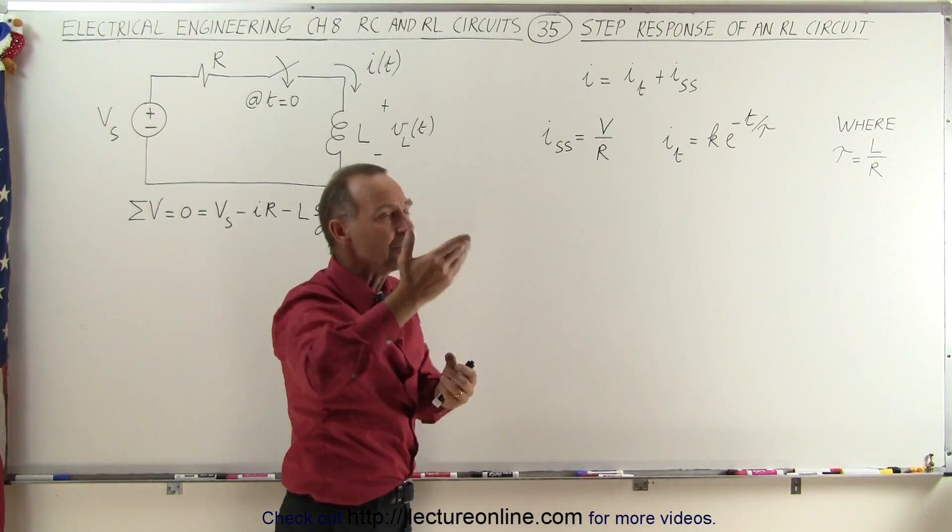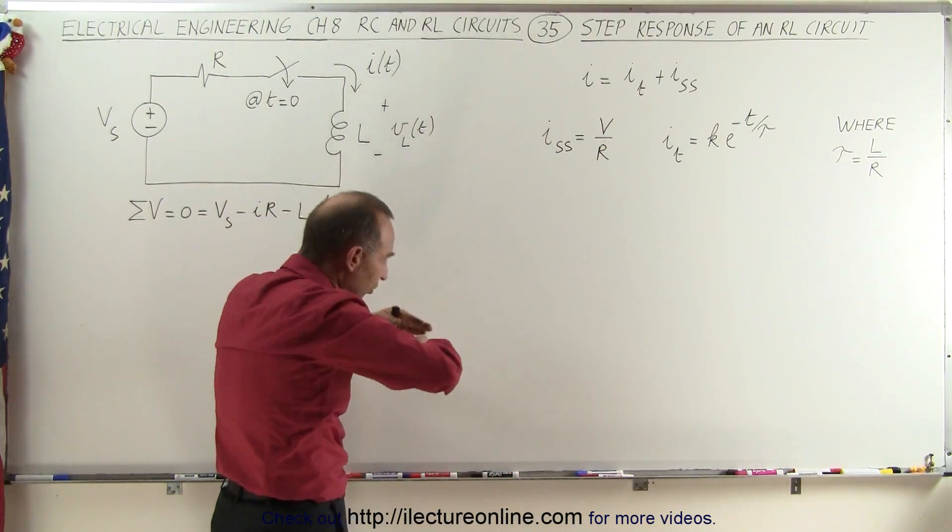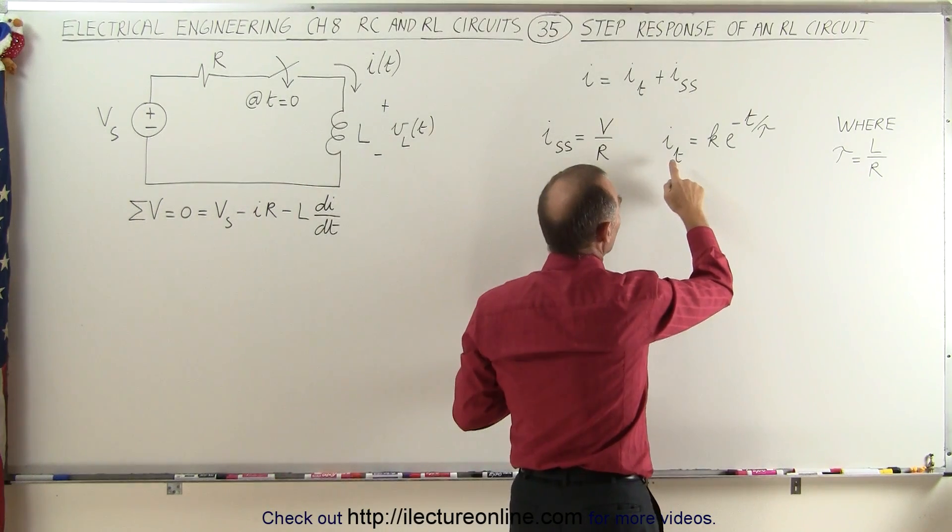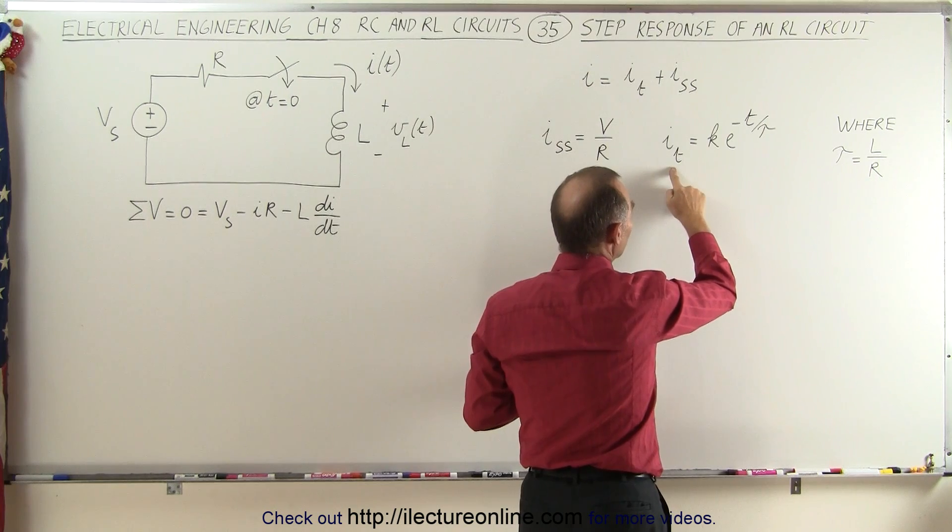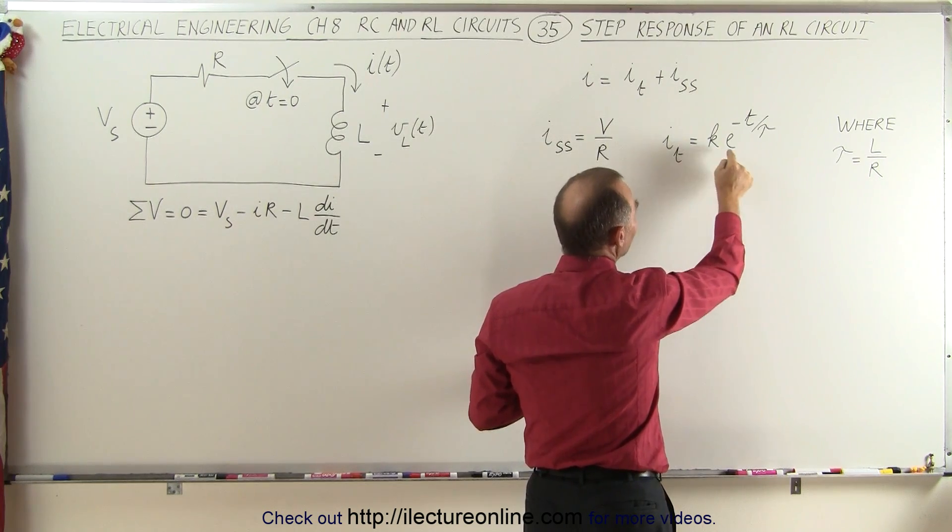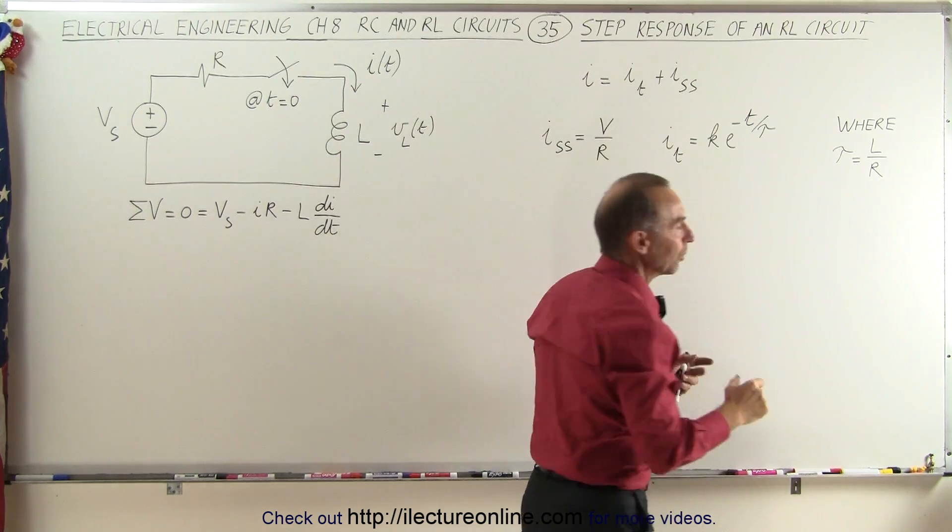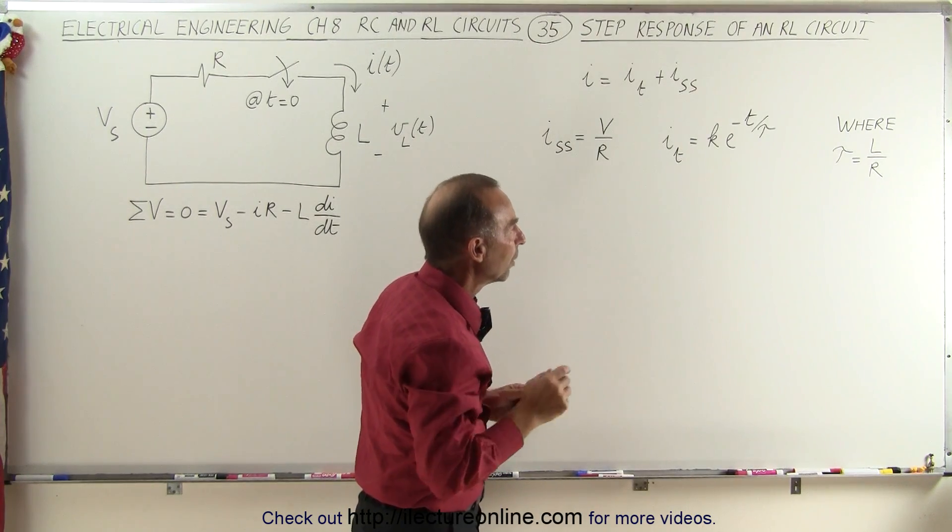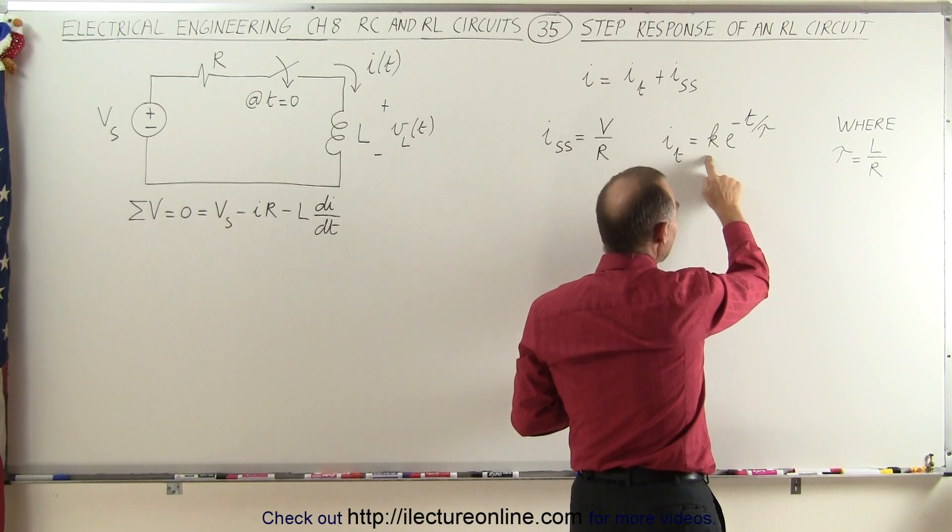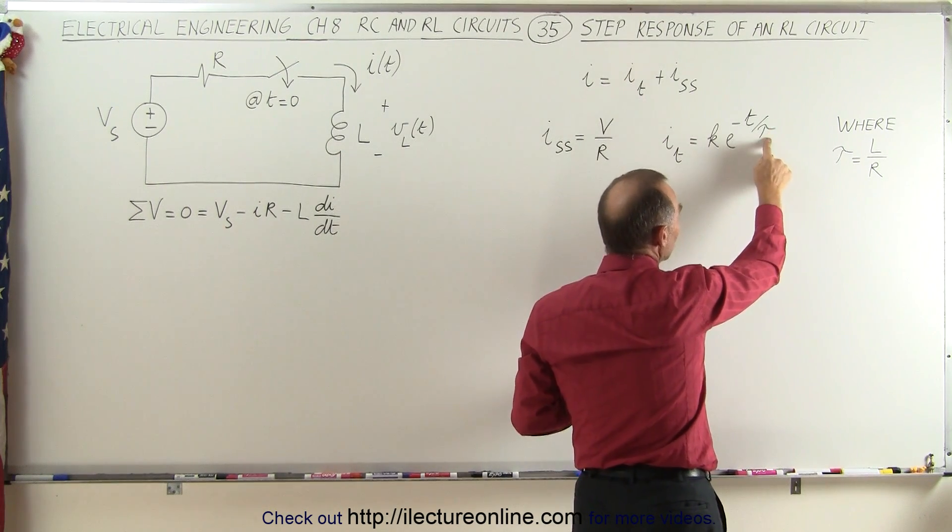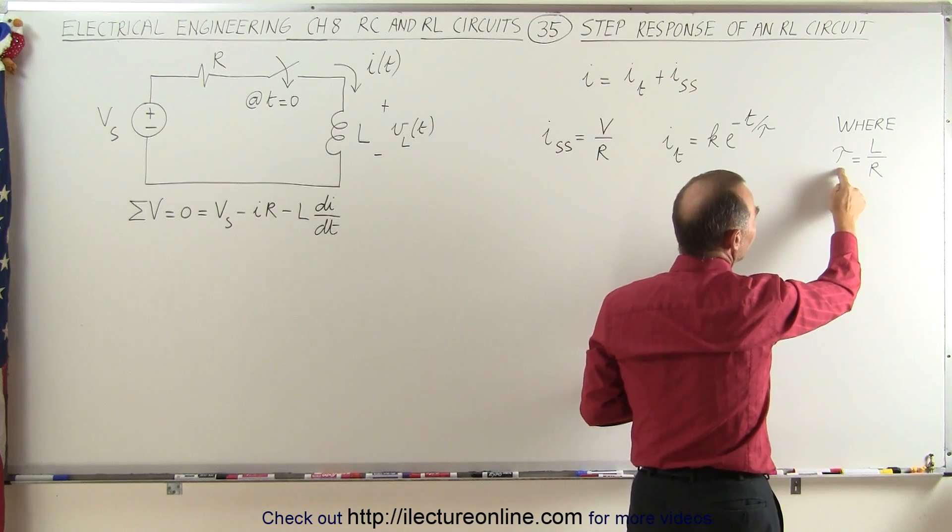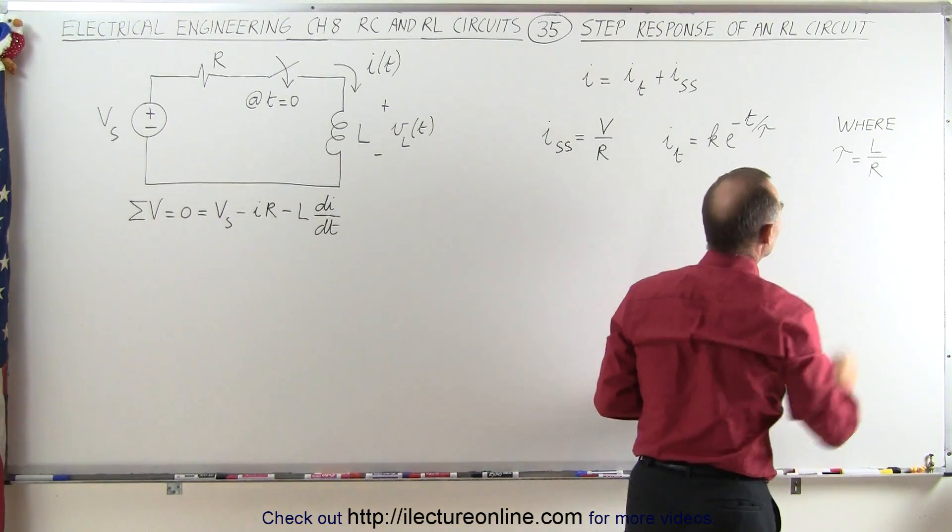But while the circuit is increasing, as soon as you close the switch, the current will increase. Then you can say that the current in the circuit, the transient portion, will be some constant times e to the minus t over tau. That's the general way in which things increase naturally. We may not know what K is, but we do know what tau is. Tau is the time constant for an LR circuit, and that is defined by the inductance divided by the resistance.